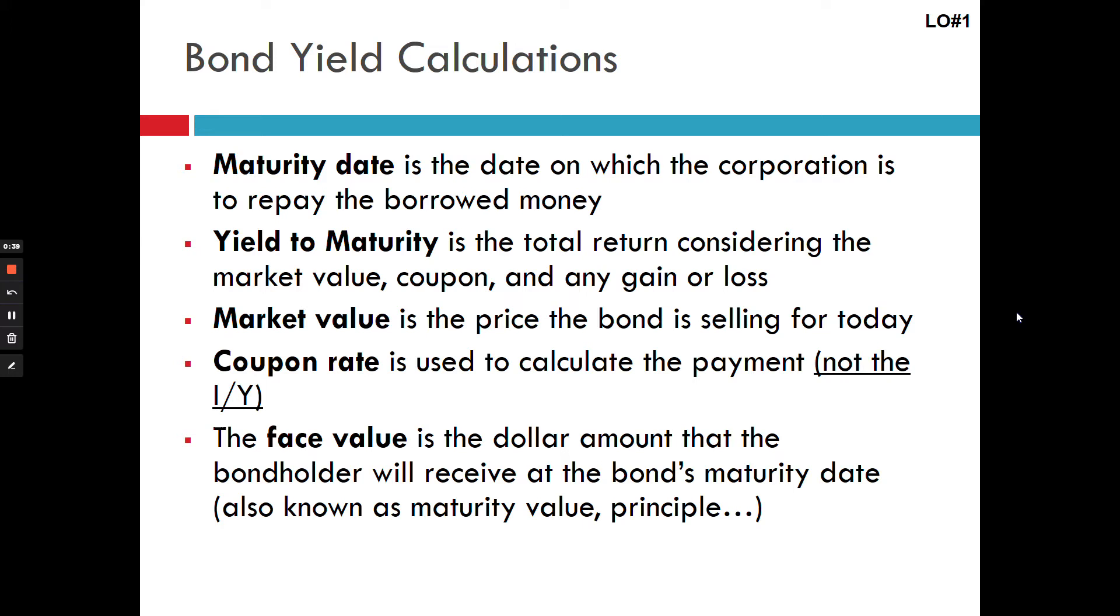First we have the maturity date or when it comes due. This could be expressed as a time or a date. So we could say it's a 10-year bond or it's coming due in 2030, assuming it is currently 2020. It's important to note that almost all bonds are semi-annually compounded and you're going to always assume that they are unless told otherwise.